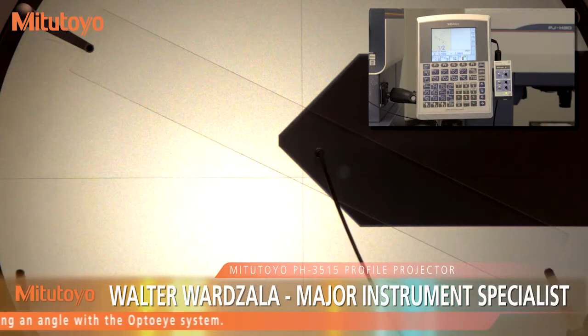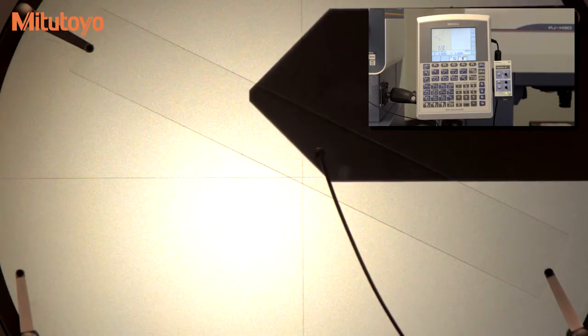Once again, the angle function is chosen from the basic feature key. The optional OPTO-I 200 then trips the measurement at the transition point from light to dark, which enters the point into the calculation.